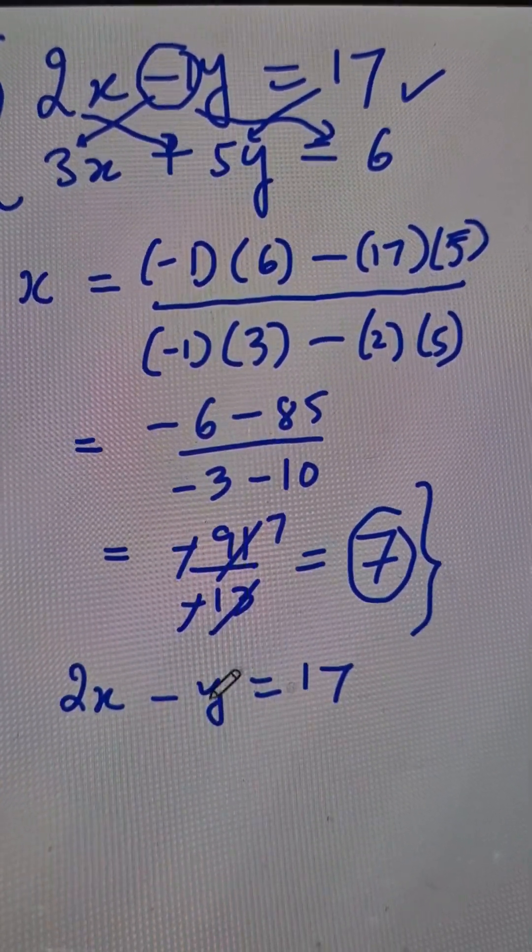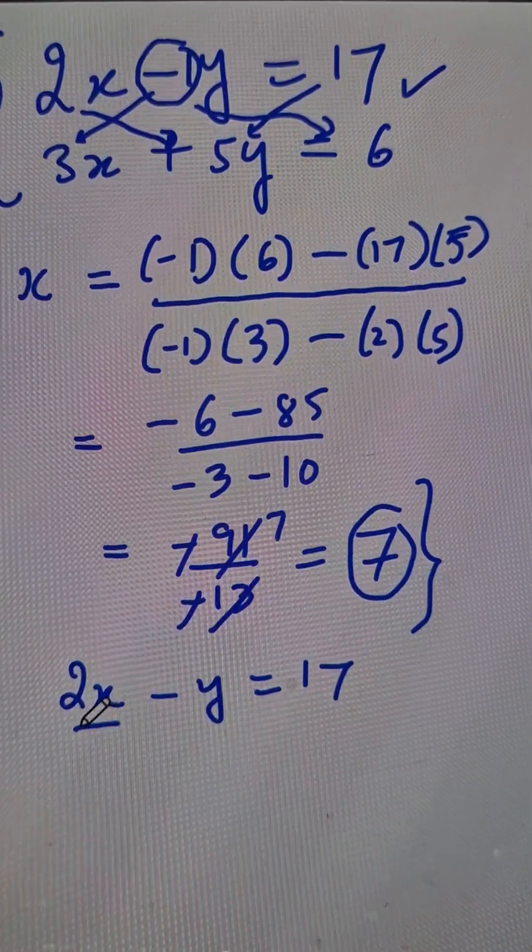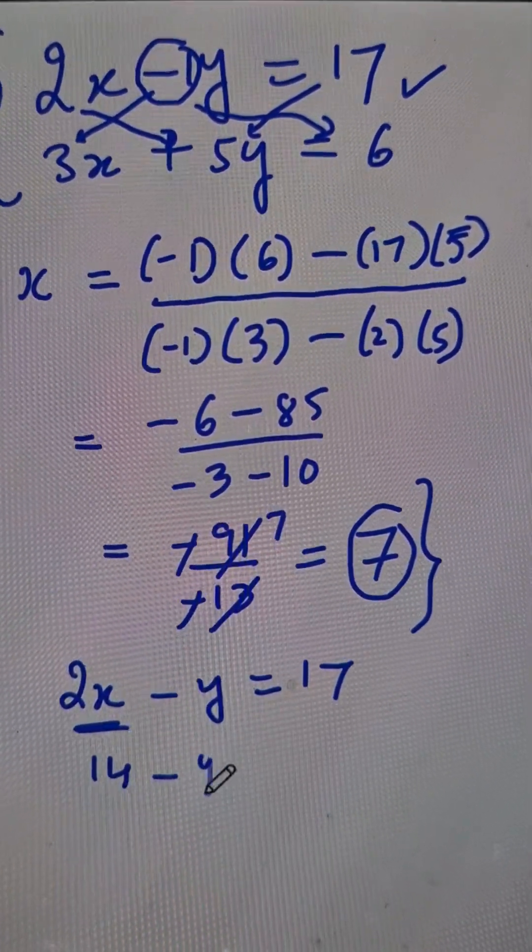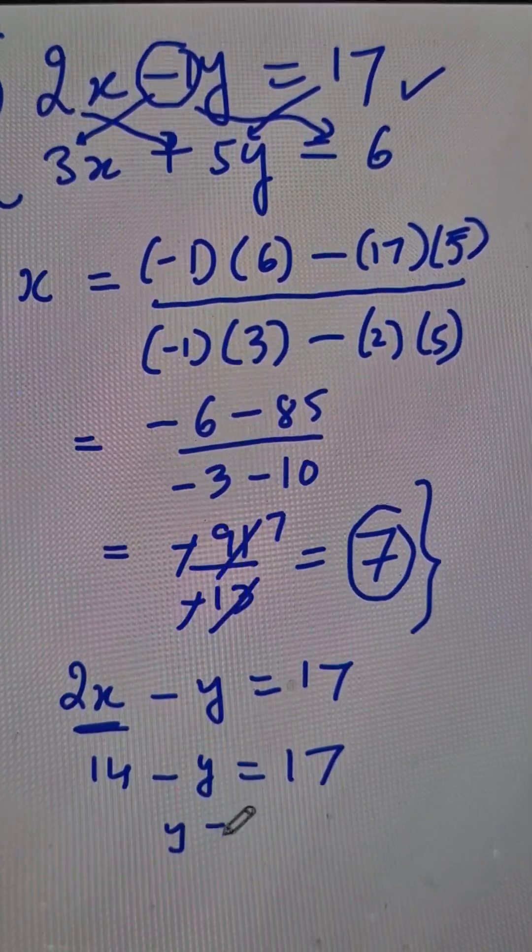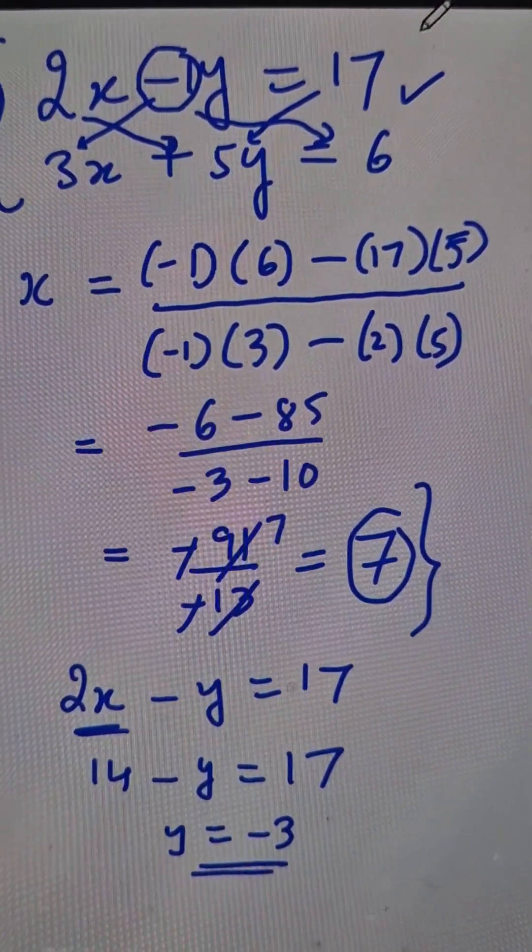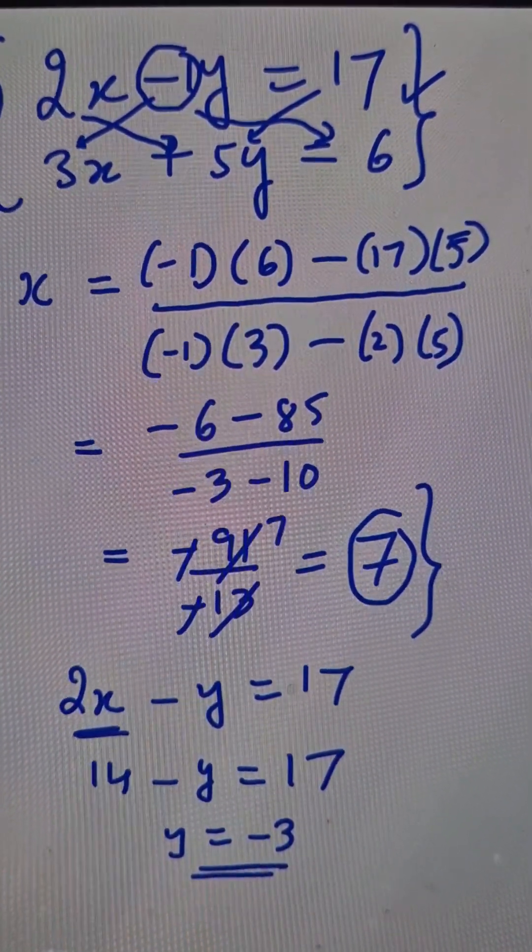So, we can just put the value of x here. x is 7, so this becomes 14 minus y equals 17, giving you the value of y as negative 3, and that solves our equation in two variables easily.